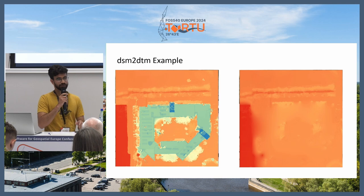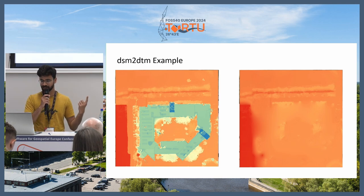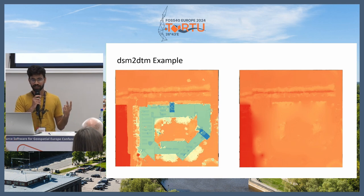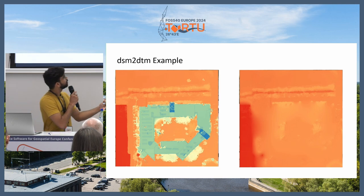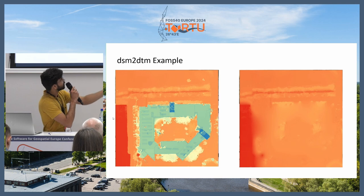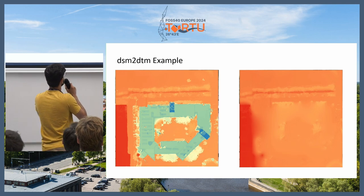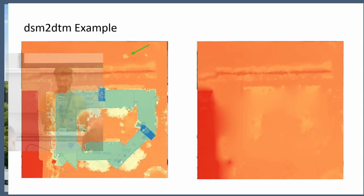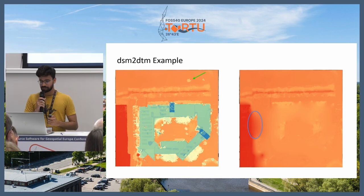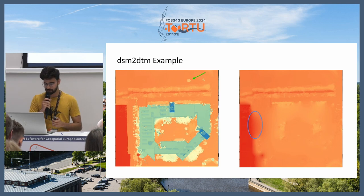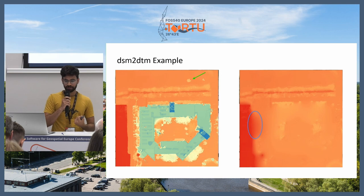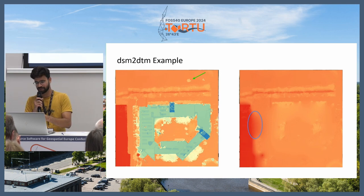Let's compare them. Generally speaking, the package gets the job done. It had three main responsibilities: remove human-made objects like buildings — it did that; remove vegetation like trees — it did that, though some remaining vegetation is visible; and retain the terrain profile — it did that too. But let's take a closer look at some shortcomings.